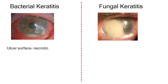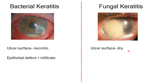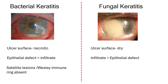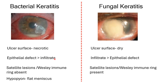Other differences: the ulcer surface in bacterial keratitis is more necrotic, while in fungal keratitis it is dry-looking — described as a 'wash-leather slough.' In bacterial keratitis, the epithelial defect is larger than the infiltrate; in fungal keratitis, the infiltrate is larger than the epithelial defect as it extends in the stroma beyond the epithelial defect. Satellite lesions and Wessely's immune ring are absent in bacterial but present in fungal keratitis.